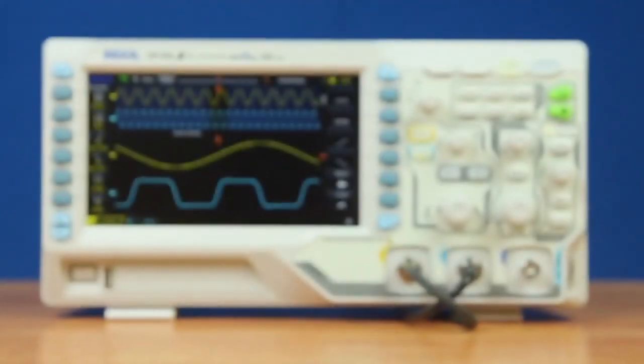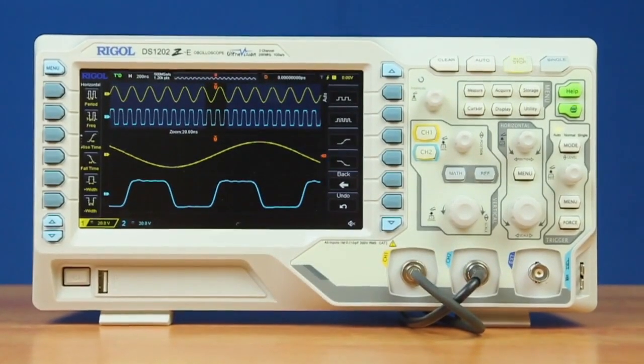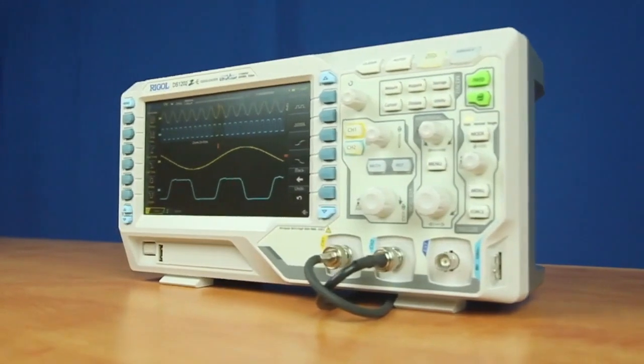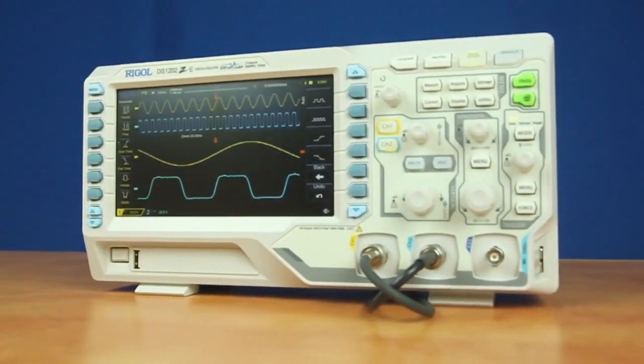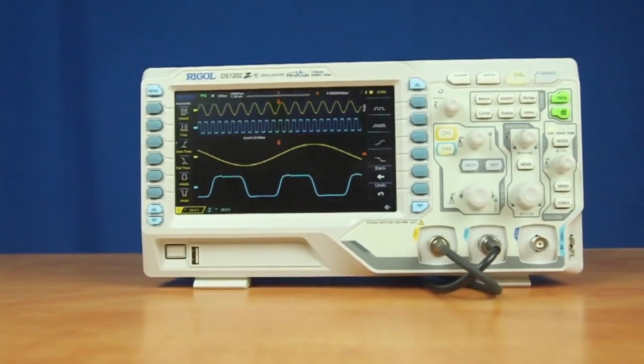Rigol's most popular oscilloscope is now extended to 200 megahertz. The new DS1202Z-E is built on the same platform as the DS1000Z family.